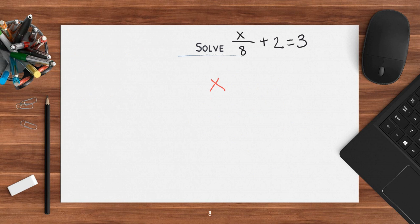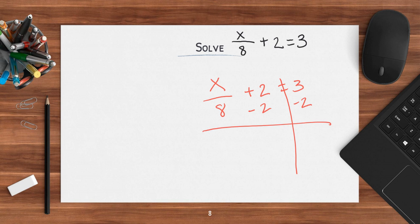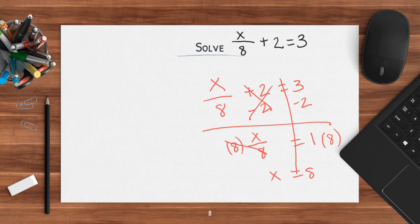In this example, I have x over 8 plus 2 equals 3. I draw my line down. x and 8 are together — x over 8 is one thing. So I start by subtracting 2. When I subtract 2 on both sides, positive 2 minus 2 cancels out. I'm left with x over 8 equals 3 minus 2, which is 1. x over 8 is division, so I multiply by 8, shown in parentheses. That cancels out, leaving x equals 1 times 8, which is 8.